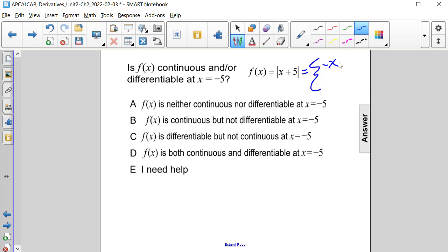Negative x minus 5 for x values less than or equal to negative 5. And it will be equal to x plus 5 for x values greater than negative 5.